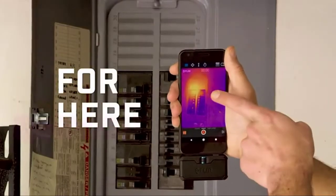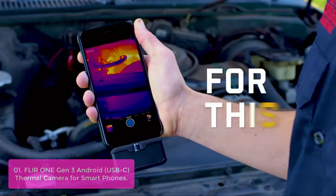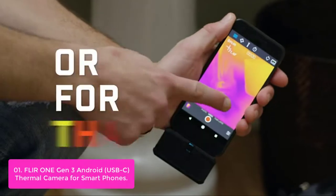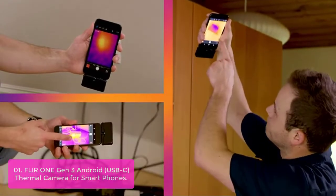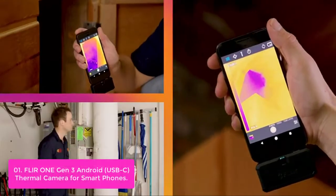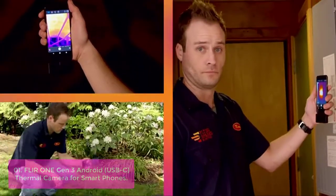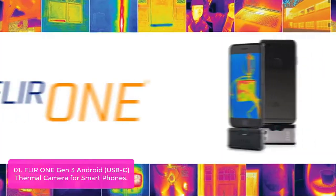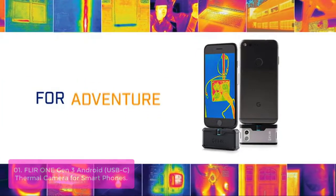List number 1, FLIR 1 Gen 3 Android USB-C thermal camera for smartphones. The FLIR 1 is the perfect thermal infrared camera accessory for photographers and video professionals, handheld camera users, drone pilots, environmentalists, and security personnel who need to quickly see what's in their scenes. The FLIR 1 is a thermal infrared camera for smartphones and tablets that transforms your device into a powerful tool for thermal imaging.